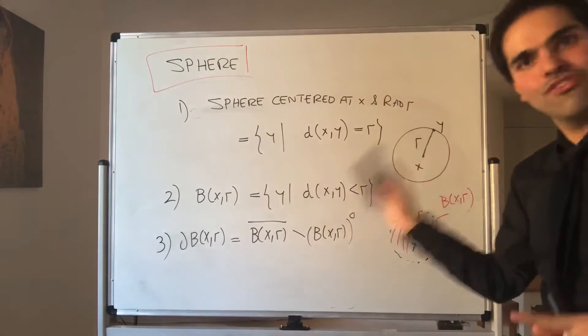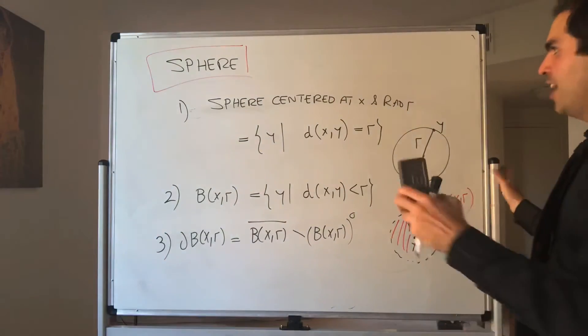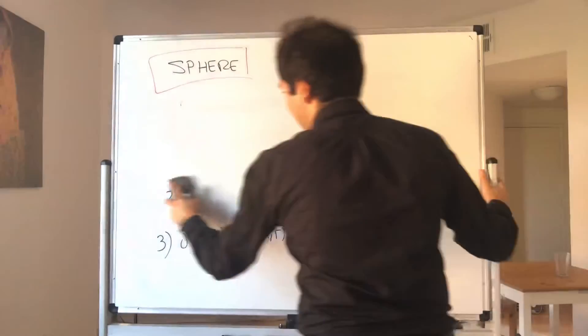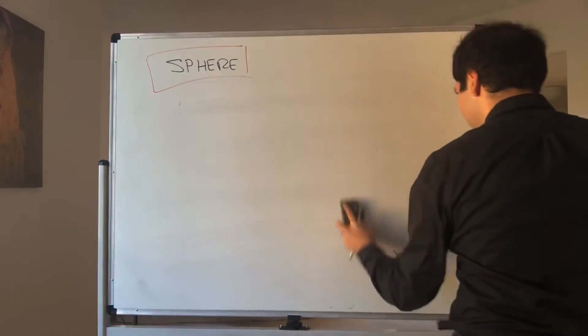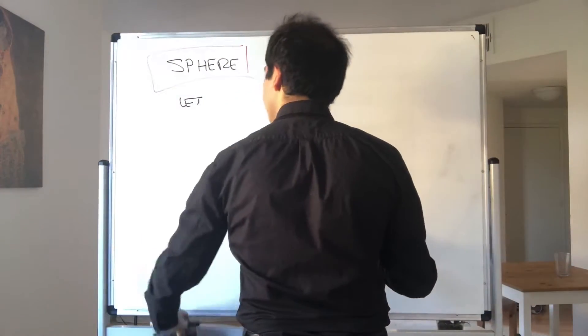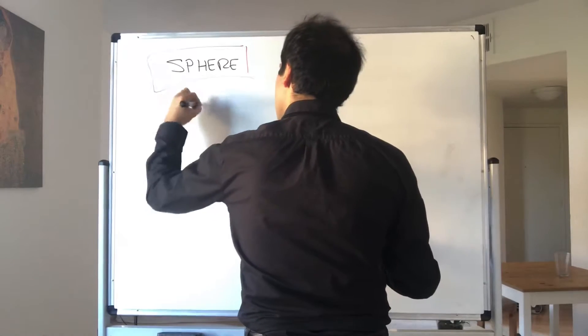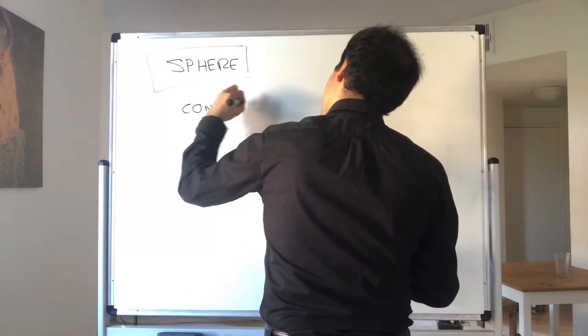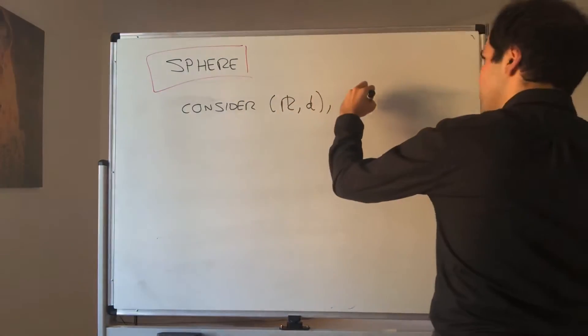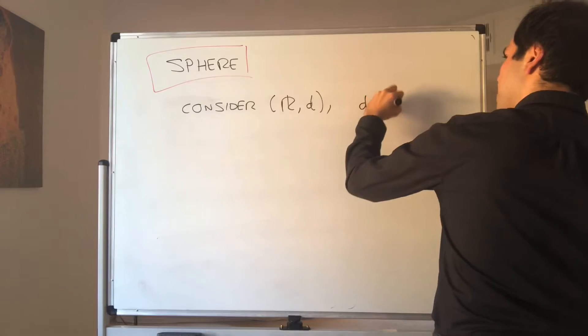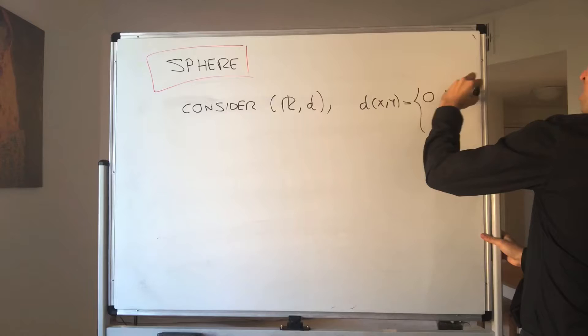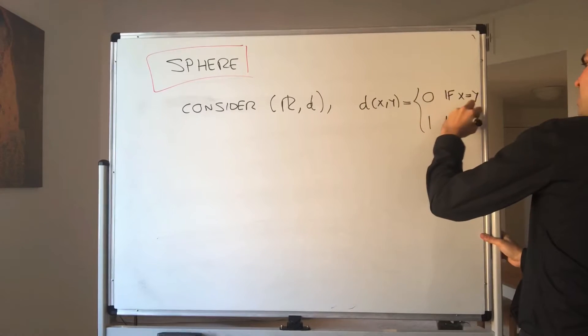Alright, and with this, we're finally ready for our counter example. So consider R, but with the discrete metric. So let's consider R_d, where d is the discrete metric, so d(x,y) is a very weird kind of metric. It's zero if x equals y, and it's one if x is not equal y.